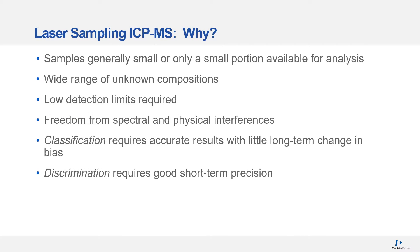General considerations for analytical requirements must take into account that the sample is usually small, or that only a small portion may be taken to perform the analysis. There are a wide range of compositions that may be encountered in a variety of matrices. Low detection limits are required because the elements of interest may be present in small amounts, but also the sample is usually small, so digestion would dilute the analytes of interest. Fewer spectral and physical interferences will ensure an accurate result in a variety of matrices.